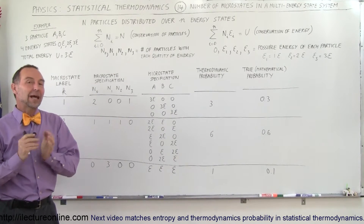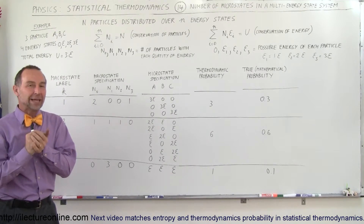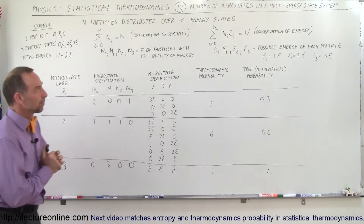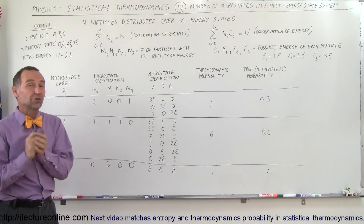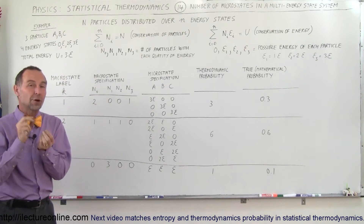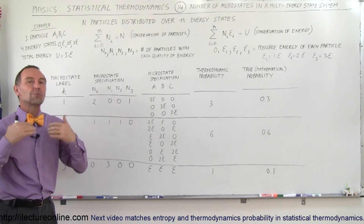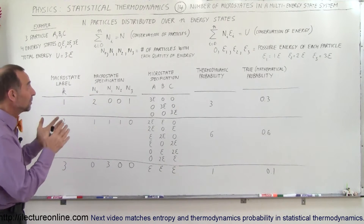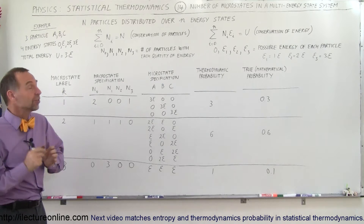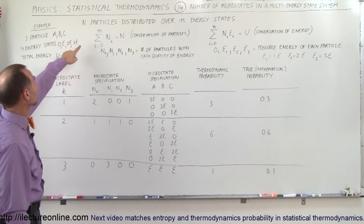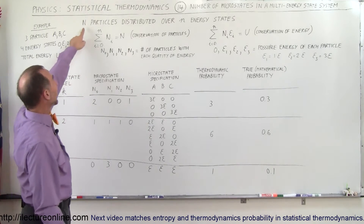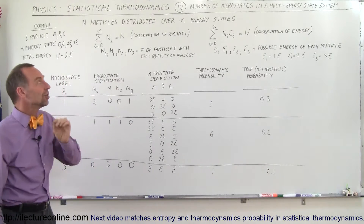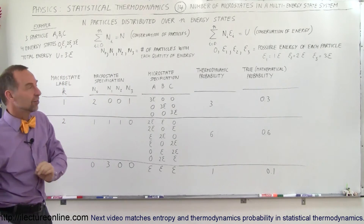Welcome to ElectronLine. Now we're going to take a look at a multi-energy state system. What we're trying to do here is figure out the number of microstates in such a multi-energy state system. In general, we're going to find that there are n particles distributed over n energy levels or n energy states.